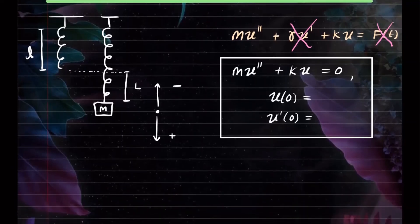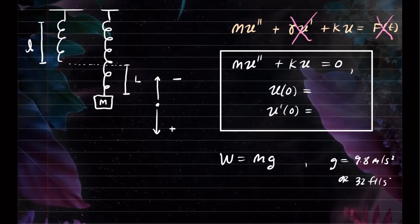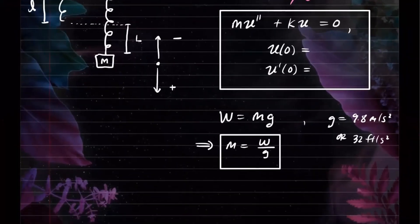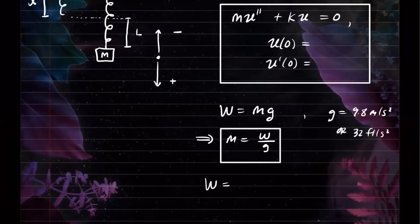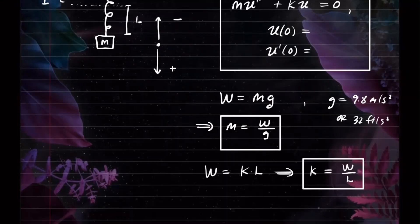Now, how do we figure out M? We know that weight equals mass times G, where G is either 9.8 m/s² or 32 ft/s², depending on the units given. So M = W/G. And K is the spring constant, determined by the formula: weight = K × L, where L is the amount the spring is stretched once you attach the mass. So K = W/L. These are the ways you find the constants K and M.